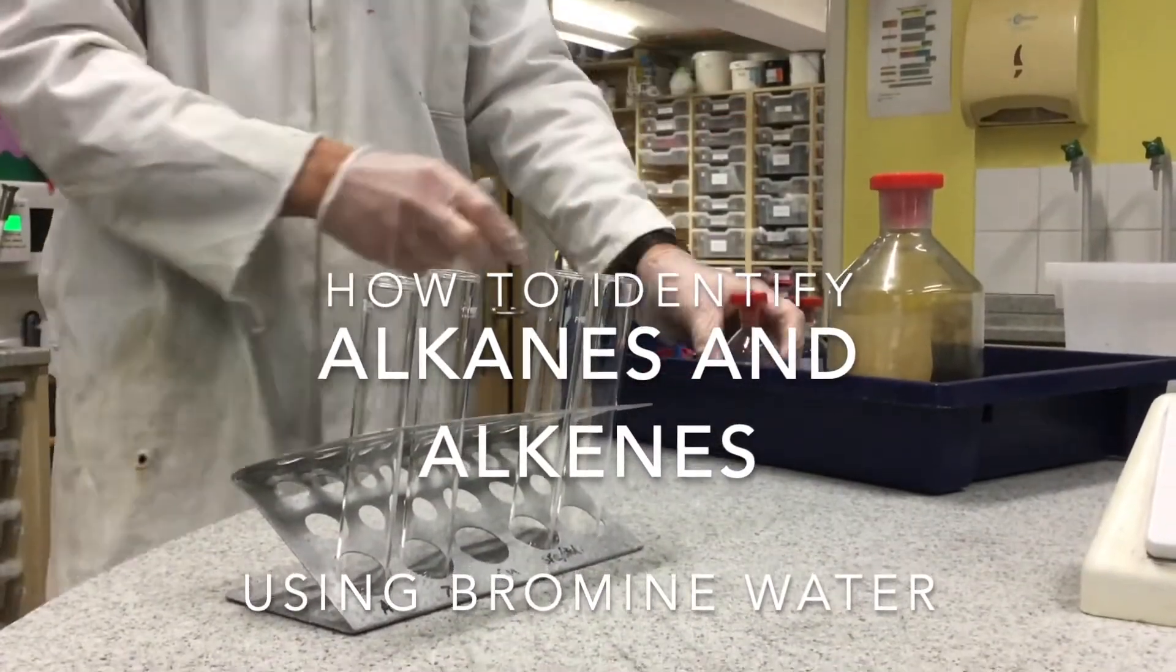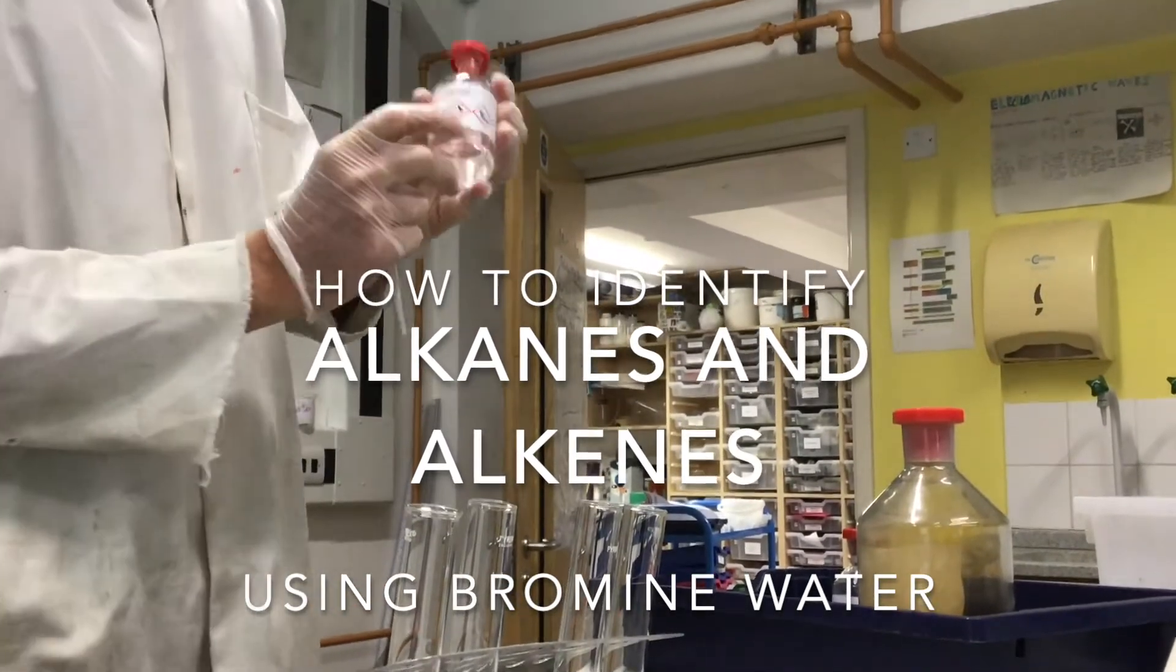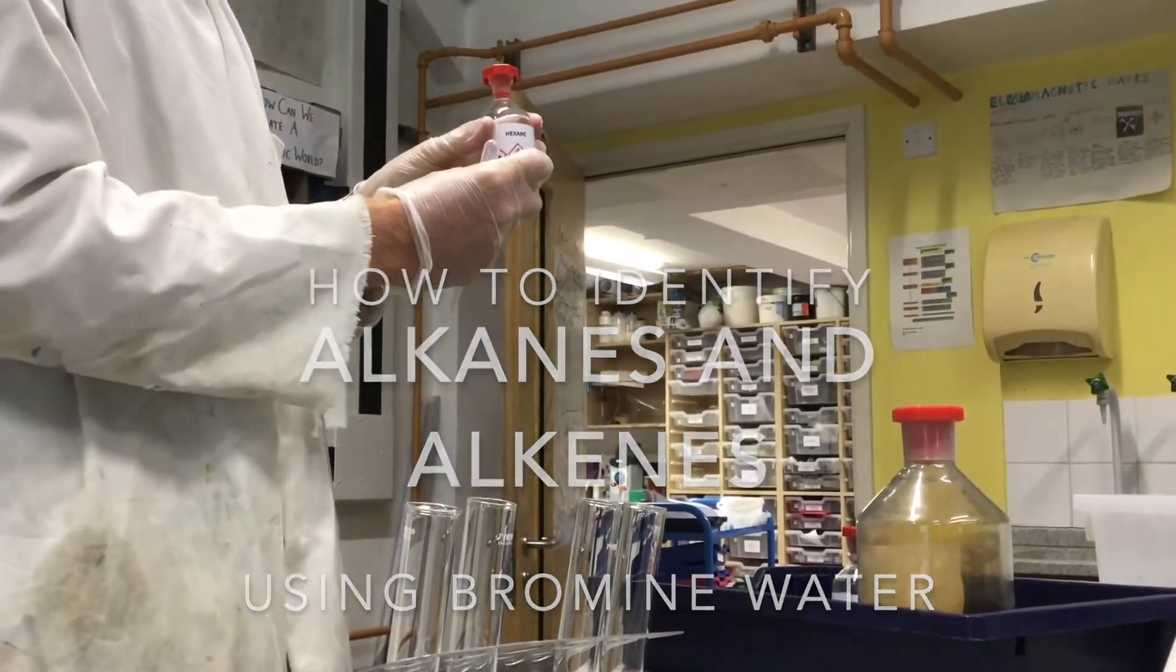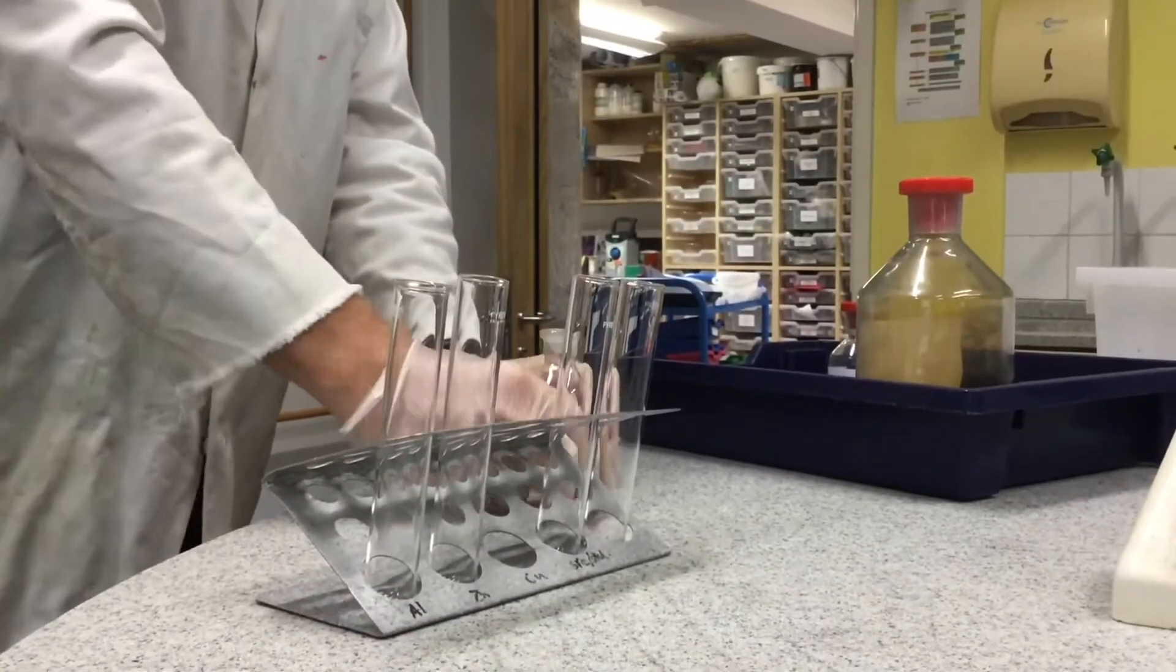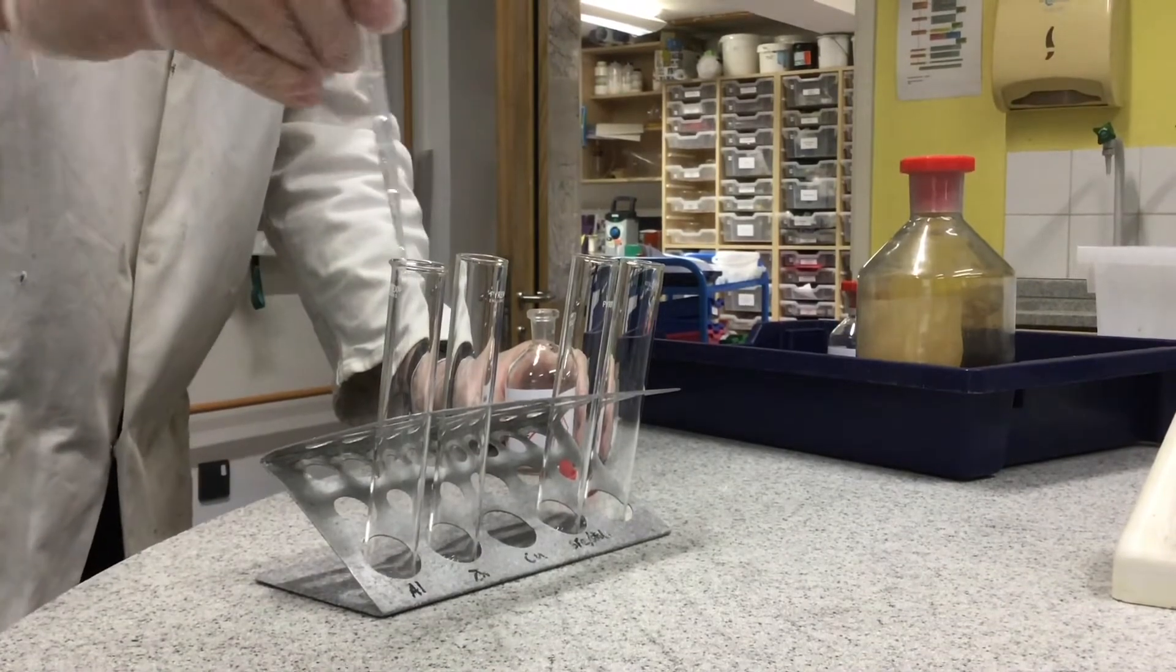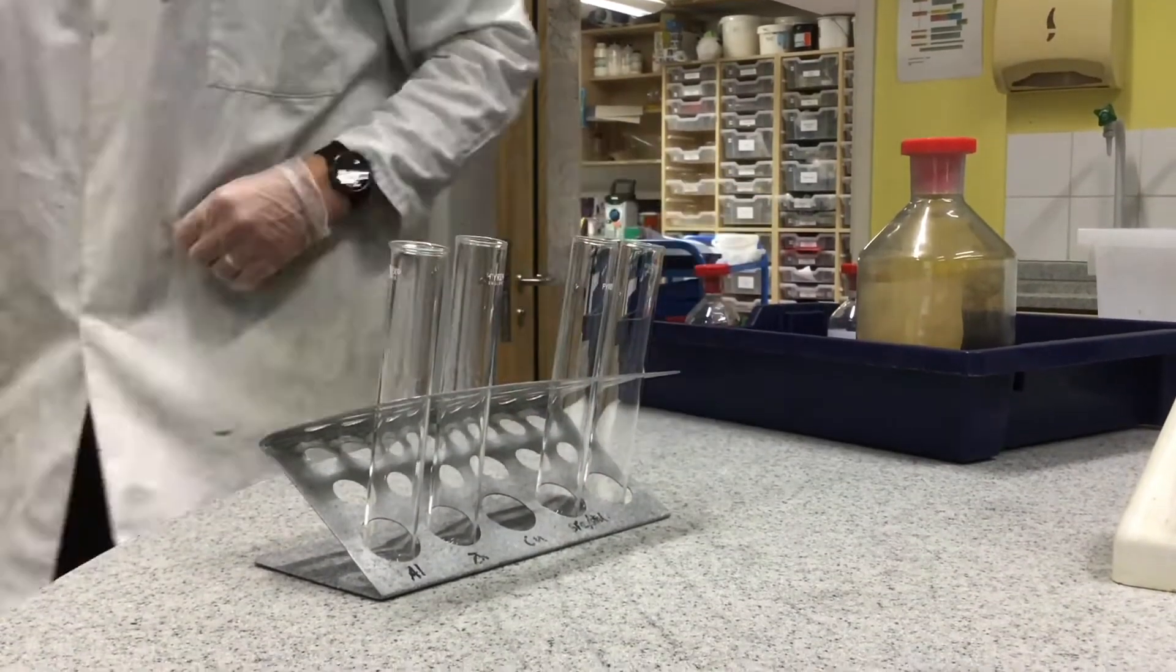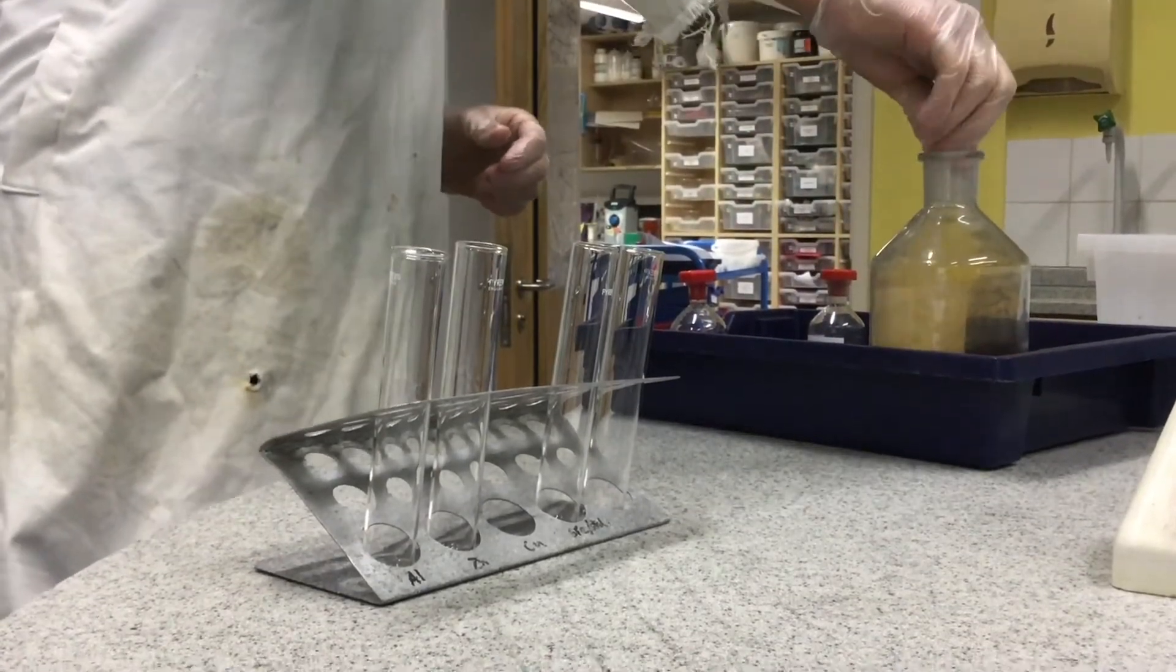Here's what happens when you use an addition reaction to identify an alkane from an alkene using bromine water. So I'm going to put some unidentified substance. I'm going to test very small amounts, 10 drops, and then I'm going to put in some very dilute bromine water.